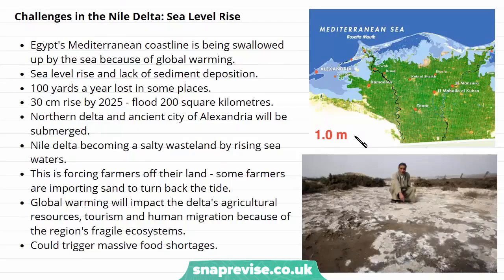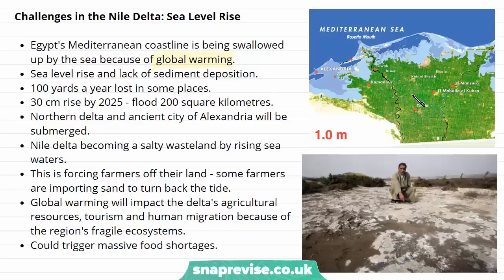Next, we're going to look at some of the challenges the Nile Delta is facing, firstly in terms of sea level rise. Egypt's Mediterranean coastline, which goes over the Nile Delta, is being swallowed up by the sea because of global warming. Sea level rise, combined with the lack of sediment deposition in the Nile Delta — because sediment is being blocked by the Aswan Dam — means that the Nile Delta is shrinking. This superimposed image here shows the current extent of the delta on this line.